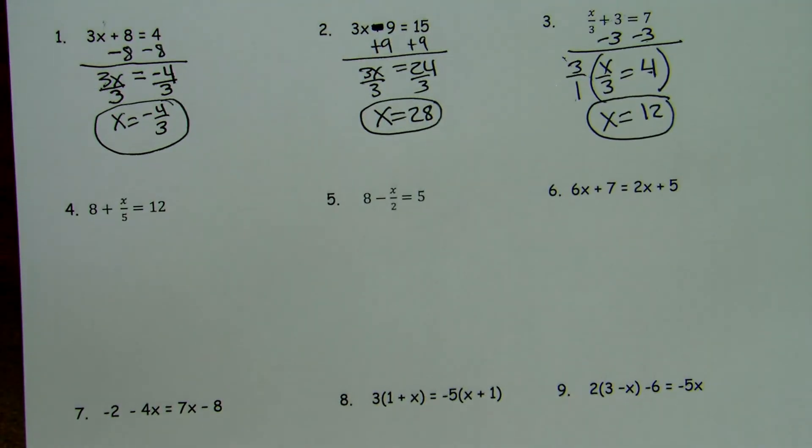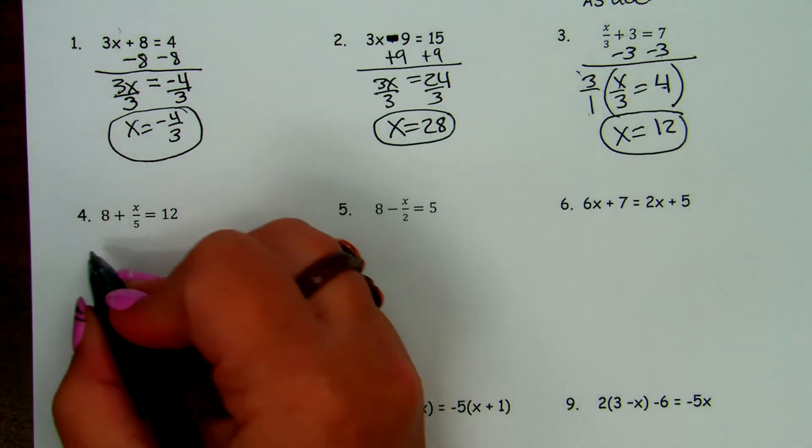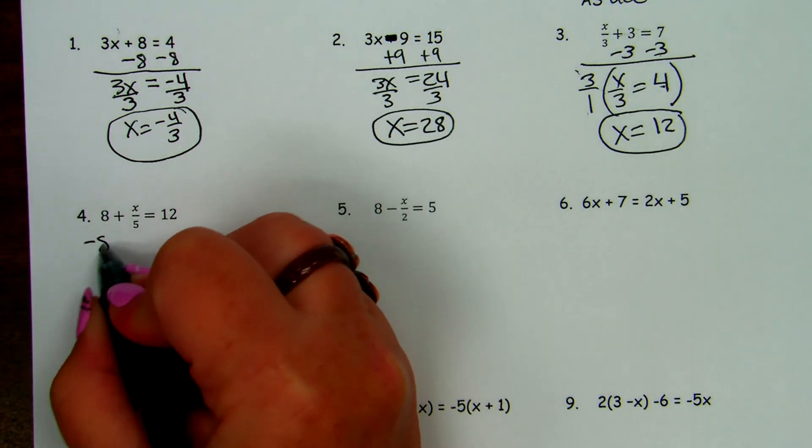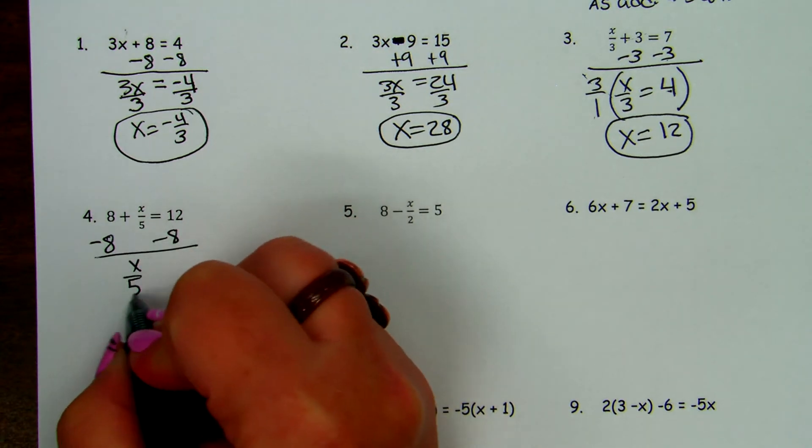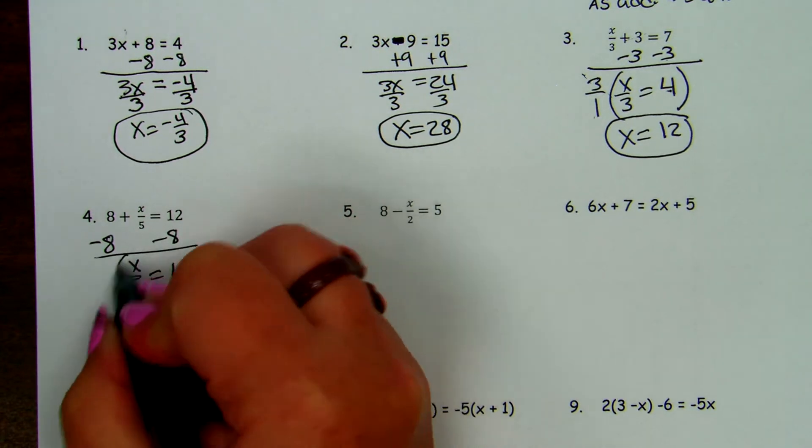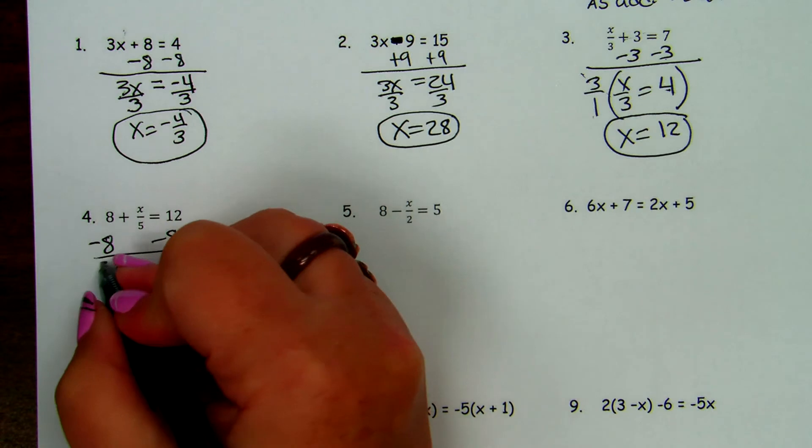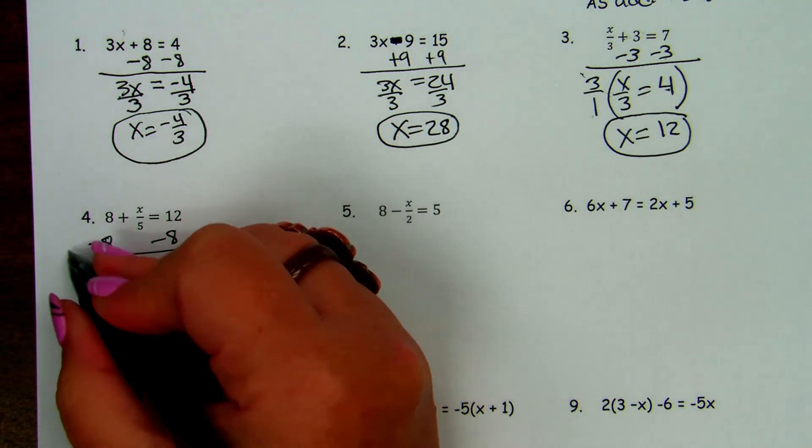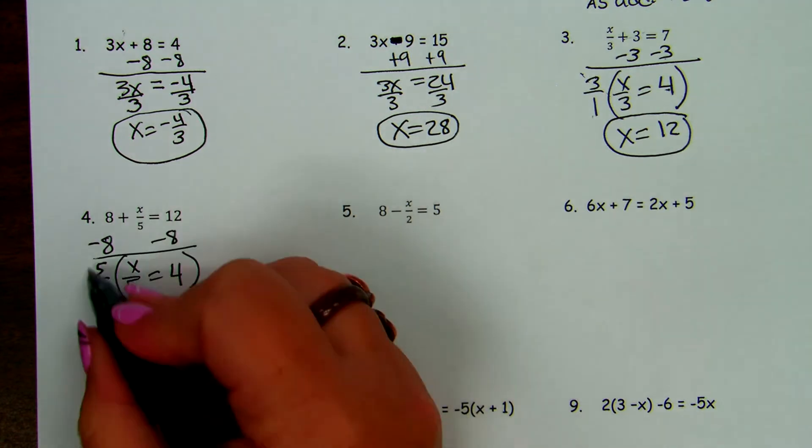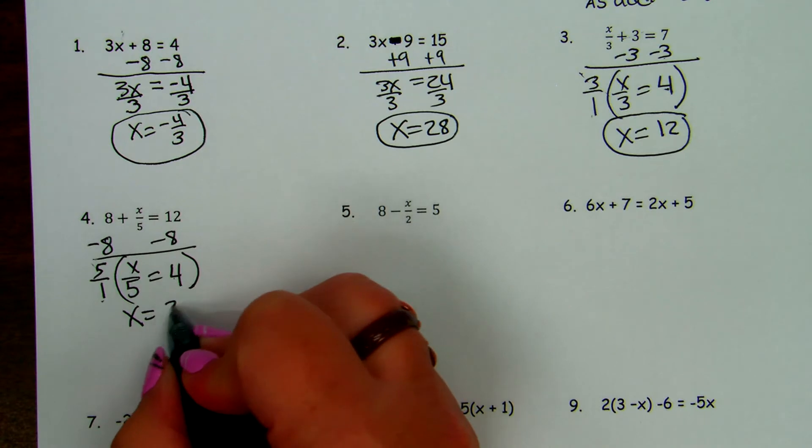Here's one that looks similar. What do we do first? So we subtract 8 from both sides. And what are we going to multiply both sides by to get rid of a division? 5 over 1. This is 1 over 5. This is the reciprocal, 5 over 1. They cancel. So these cancel, and we get x equals 5 over 1 times 4 is 20.